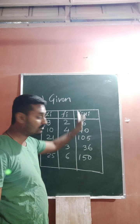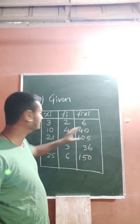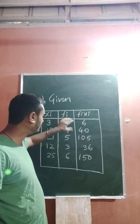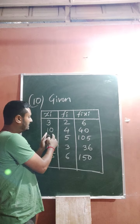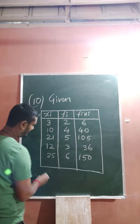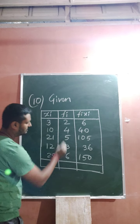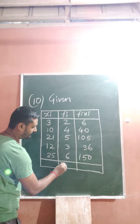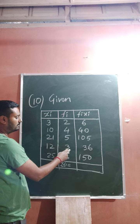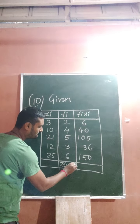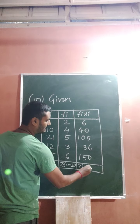The xi and fi are given. To solve this type of question, you make another column for fi·xi — multiply the respective values: 3 with 2, 10 with 4, and so on. After that, add the fi values: 2 plus 4 is 6, plus 5 is 11, plus 3 is 14, plus 6 is 20. So sigma fi is 20.